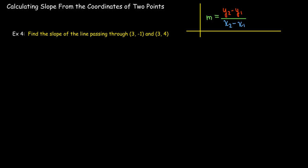Here's another example. I have 3 comma negative 1 and 3 comma 4. Go ahead and label those. Substitute it into my formula. And now I get a zero in the denominator. You cannot divide by zero. So this tells me that this is a vertical line and its slope is undefined.